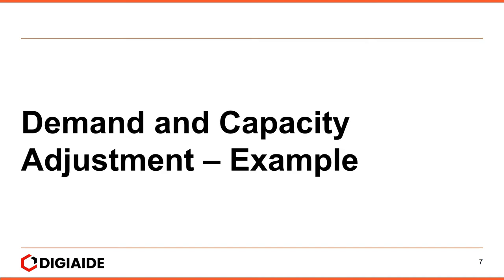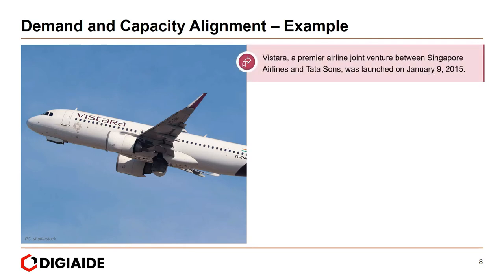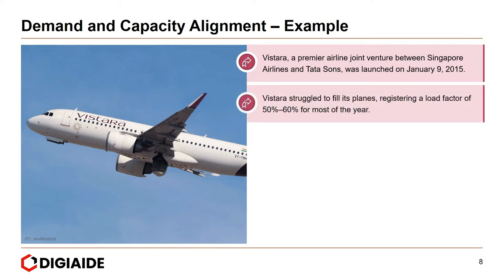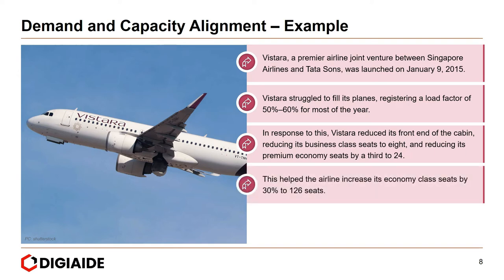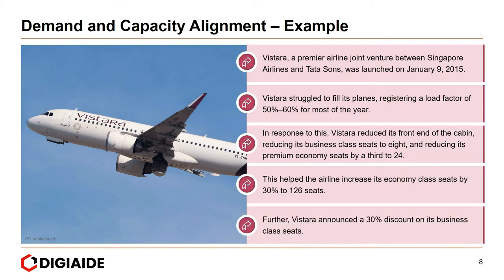Let's look at some live examples of demand and capacity adjustment. Vistara, a premier airline joint venture between Singapore Airlines and Tata Sons, was launched on January 9, 2015. Vistara initially struggled to fill its planes, achieving a load factor of only 50 to 60% for most of the year. In response, Vistara reduced its business class seats to 8 and reduced its premium economy seats by a third to 24, increasing economy class seats by 30% to 126 seats. Vistara also announced a 30% discount on business class seats. By adjusting the number of seats across cabin classes, Vistara was managing the supply it offered.